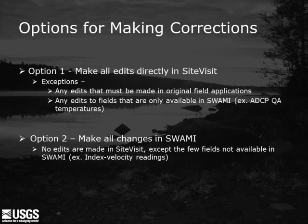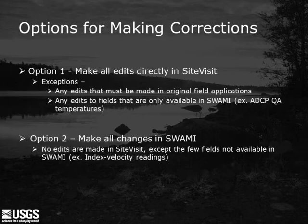There are two general methods for correcting information for a site visit. The first method is to make all edits directly in SiteVisit, except those edits that must be made in the original field application, like manufacturer ADCP software, then re-imported into SWAMI. The exception is fields only available in SWAMI, such as ADCP QA temperatures. The second method is to make all changes in SWAMI and no edits in SiteVisit, except for the few fields that are not available in SWAMI.